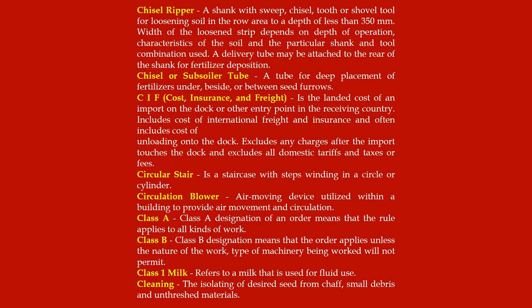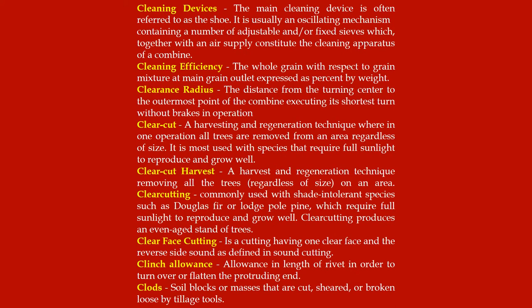Class one milk: refers to milk that is used for fluid use. Cleaning: the isolating of desired seed from chaff, small debris and unthreshed materials. Cleaning devices: the main cleaning device is often referred to as the shoe; it is usually an oscillating mechanism containing a number of adjustable and/or fixed sieves which together with an air supply constitute the cleaning apparatus of a combine.